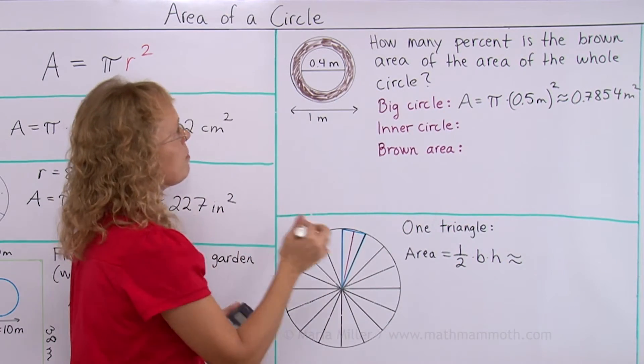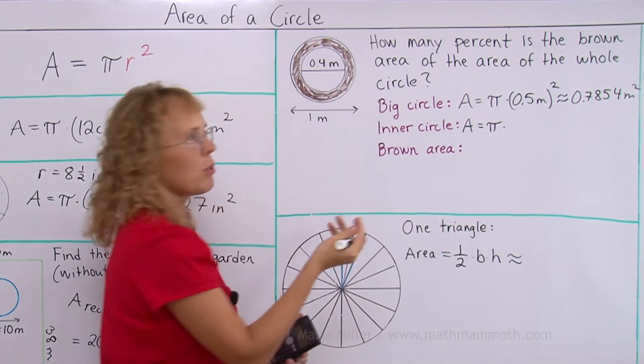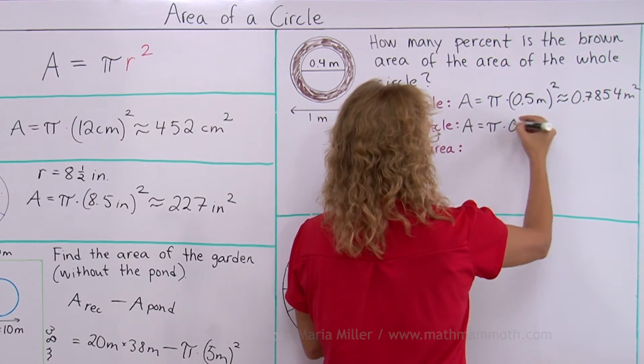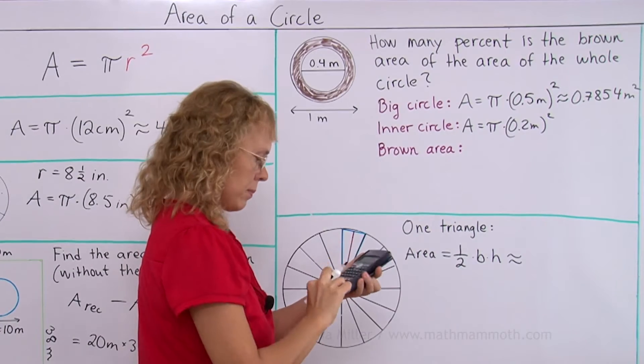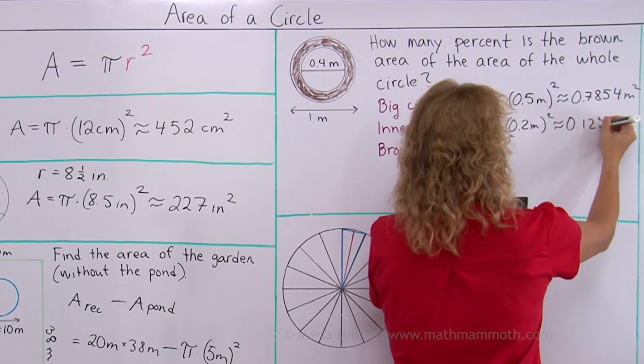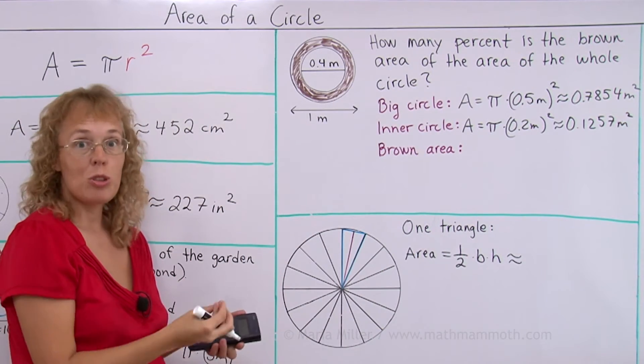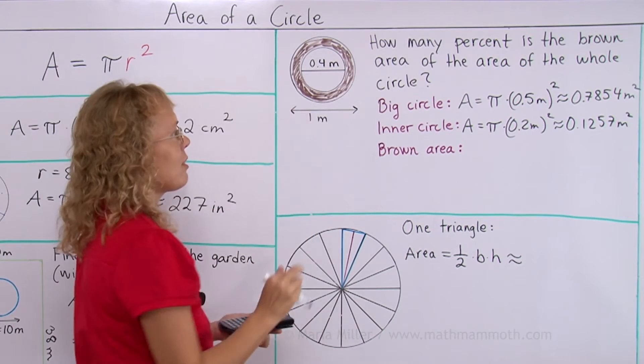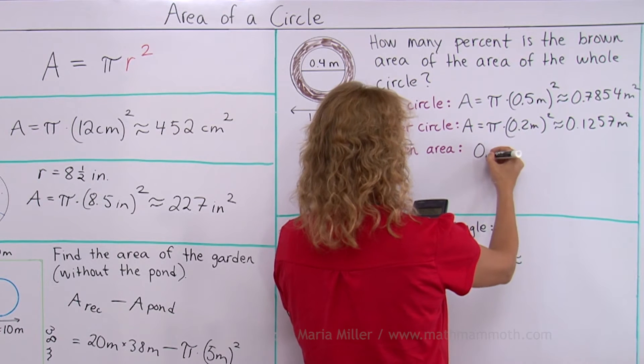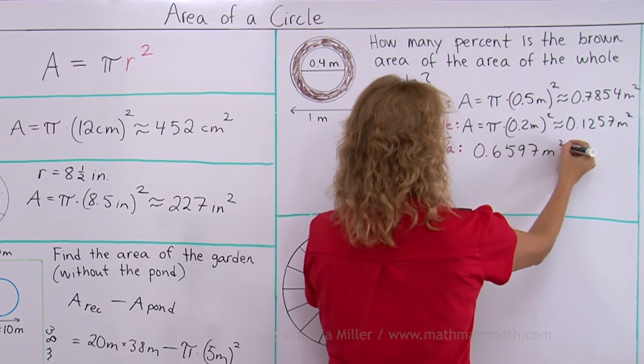Inner circle, its area would be pi times radius, which is now 0.2 meters. About 0.1257 square meters. Now, we subtract those to get this brown area, right? And so the brown area is about 0.6597 square meters.